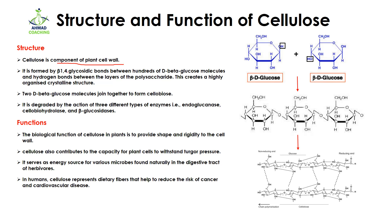Cellulose is formed by 1-4 glycosidic bonds between hundreds of D-beta glucose units. Two things to address: what is beta D-glucose, and what is a beta 1-4 glycosidic bond? Here you can see the structure of beta D-glucose. The orientation of the OH group is above the plane. When the OH is above the plane, it means it is beta D-glucose.